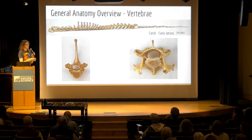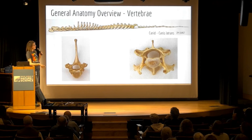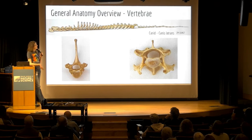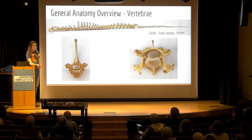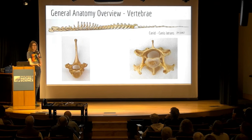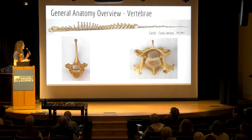We're going to primarily talk about three species: the first is a canid, Canis latrans, the coyote. When you're learning veterinary anatomy, you start with the dog, then typically expand to the horse and the cow. I'm going to work with those today.